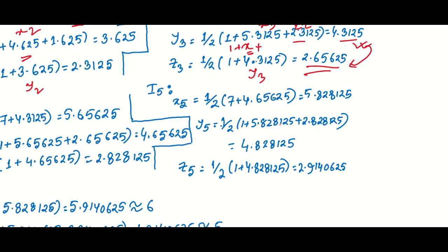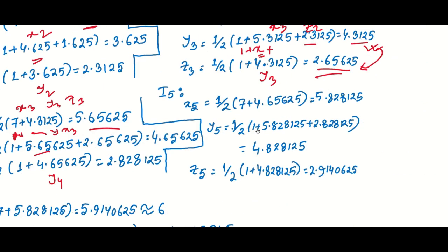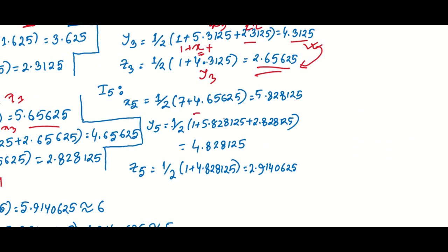We continue to the next iteration. X4 is equal to half of 7 plus y3 plus z3. We use x3, y3, and z3 as the base values to compute x4, y4, and z4 in the fourth iteration.